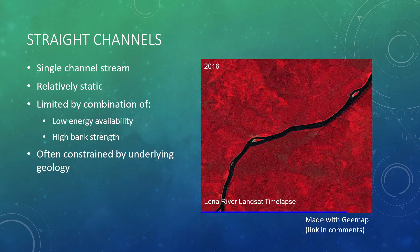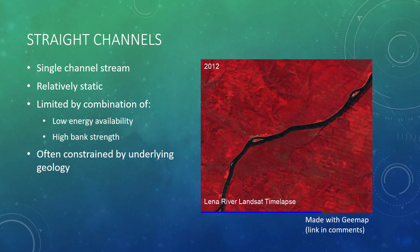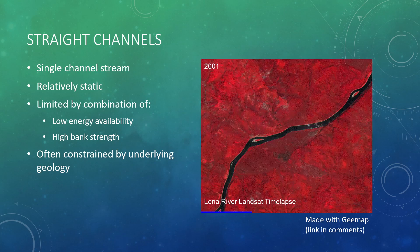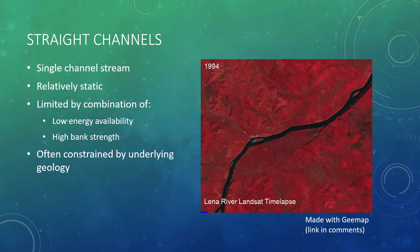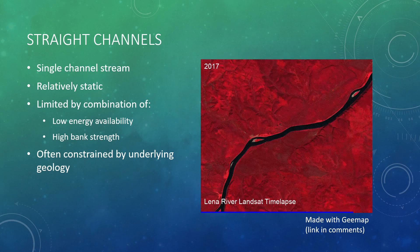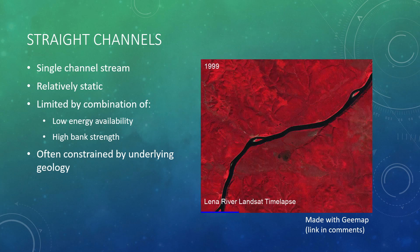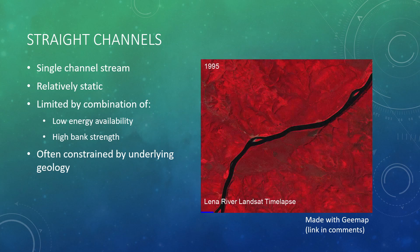Let's start with a straight channel. Straight channels are typically single channel streams. They're also relatively static, meaning that because of factors like cohesive bank material, limitations in energy, and geologic constraints, this channel is not prone to move around laterally very fast. While straight channels are often less common in nature, human modification and channelization are causing an increase in this type of channel form.